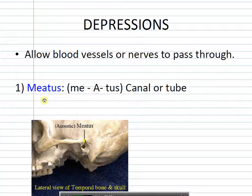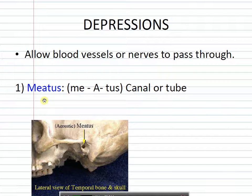The first depression type is a meatus, and a meatus means it's a tube-like structure. So if you hear about the acoustic meatus or the auditory meatus, where would you predict it would be? Auditory or acoustic — those are words related to sound. So you see the little tube — that's where the ear would be. It's called the acoustic meatus or auditory meatus — that's the ear canal.